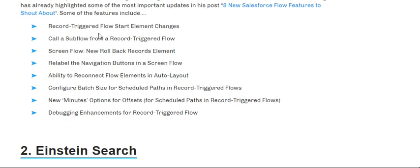With the record-triggered flow, the start element changes include: calling a sub-flow from a record-triggered flow, screen flow, new rollback records element, reliable navigation buttons in screen flow, ability to reconnect flow elements, auto layout, configure bed size, and scheduled paths for record-triggered flows, plus a new minutes option for offsets and an enhanced flow debugger.